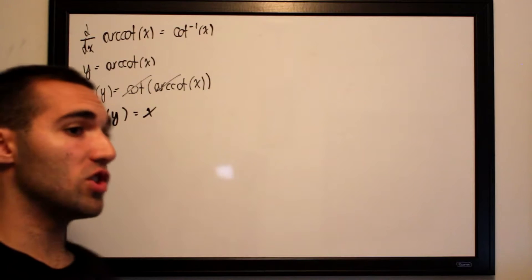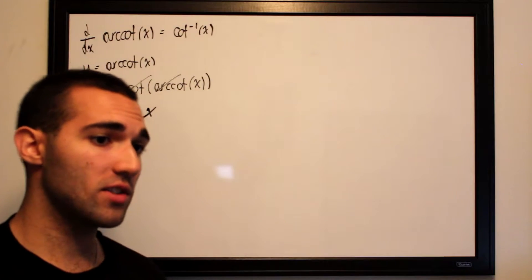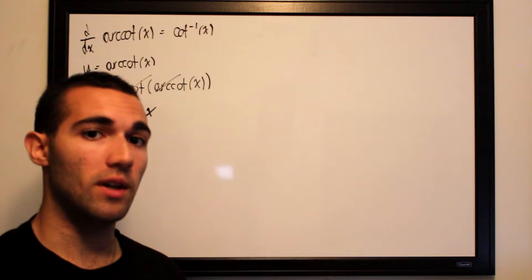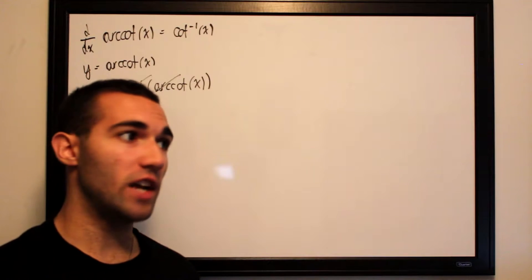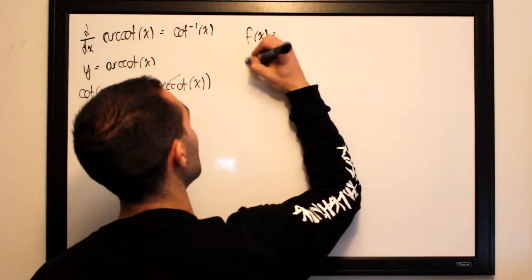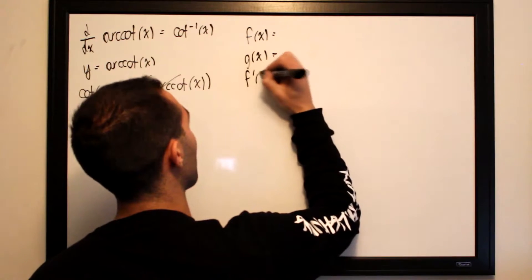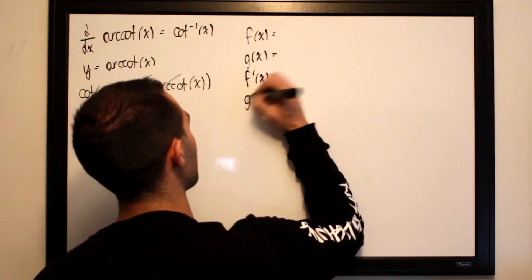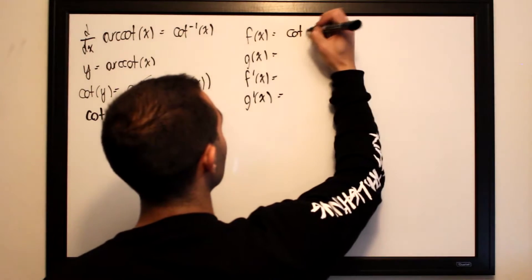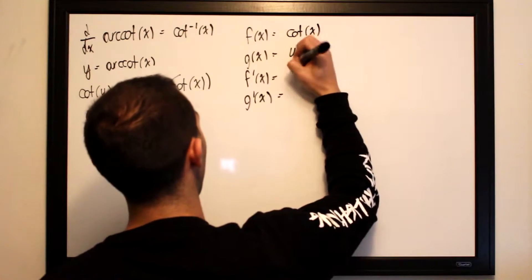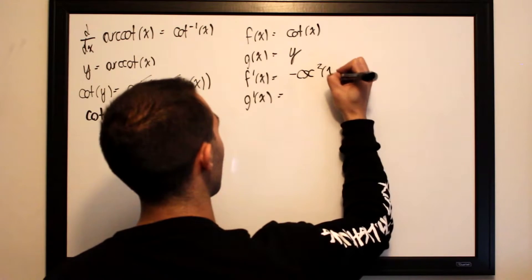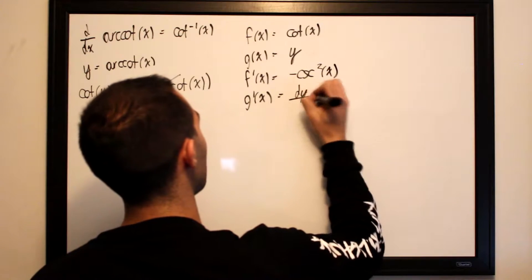We want to differentiate both sides with respect to x. We take the derivative of cotangent of y, where y is a function of x, using the chain rule, where f(x) is the outer function and g(x) is the inner function. The outer function is cotangent, the inner function is y, and the derivative of cotangent of x is negative cosecant squared of x, while the derivative of y is dy/dx.